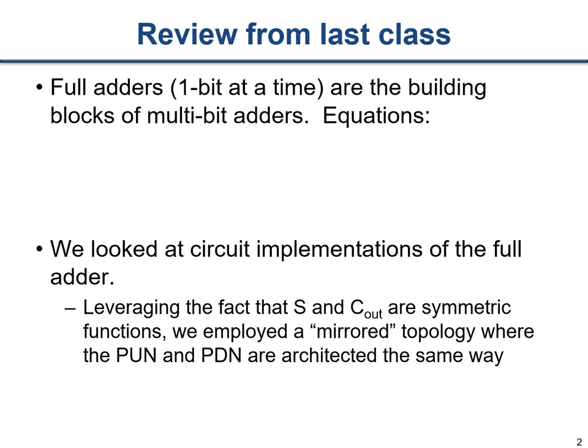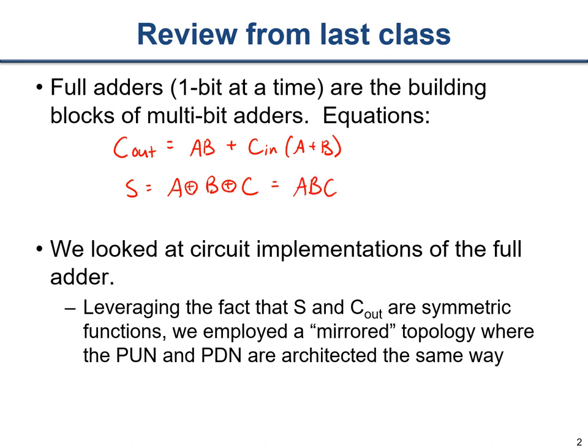In the last lecture we discussed how we build a full one-bit adder. These are based on some basic Boolean building blocks where the carry-out, c_out, is equal to (A AND B) OR (c_in AND (A OR B)), whereas the sum at the output is the exclusive-OR of A, B, exclusive-ORed with c_in, which we could simplify to: A·B·C OR (c_out_bar AND (A OR B OR C)), where C represents c_in in this particular case.